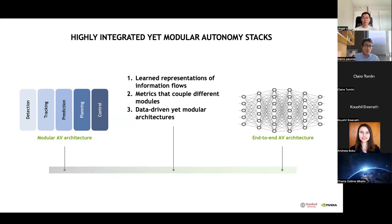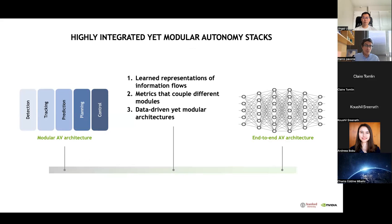A natural question is whether we can get the best of both worlds in terms of architecture designs. We're currently working on novel architectures that are still modular but better align and integrate the different modules with respect to three key aspects: more expressive and learned representations of information flows; metrics that capture upstream and downstream information flows by coupling the design of different modules; and algorithmic approaches to co-designing the different modules.